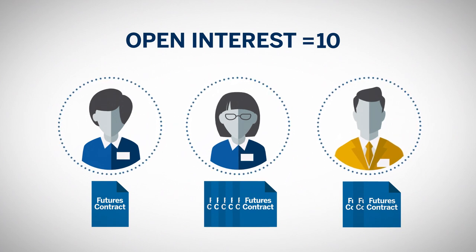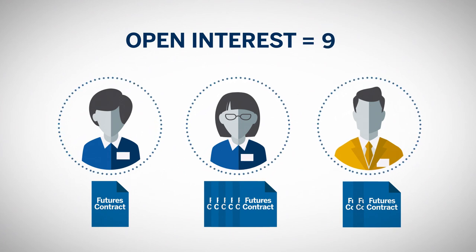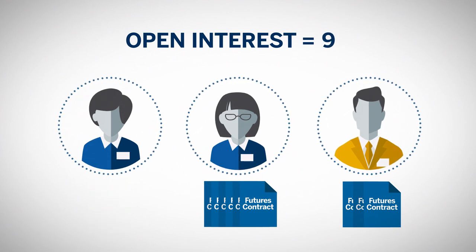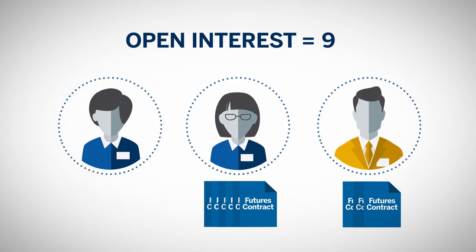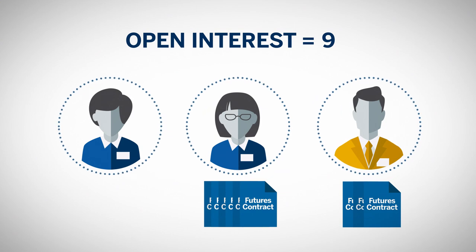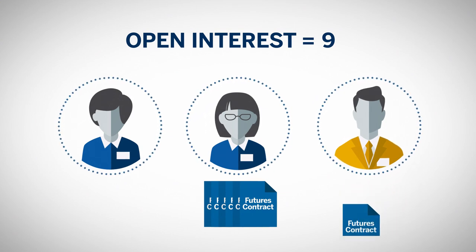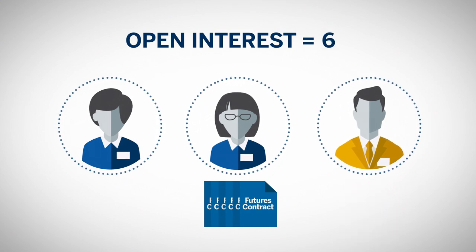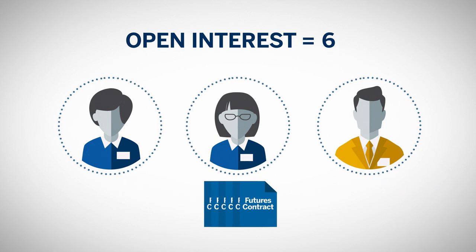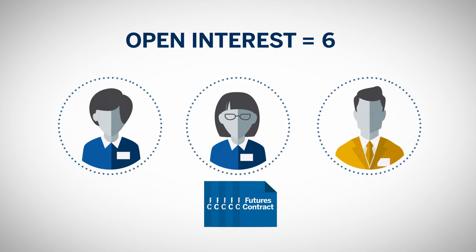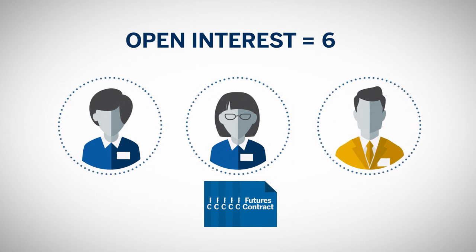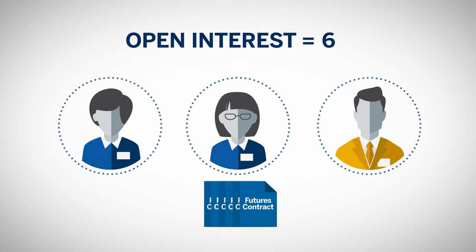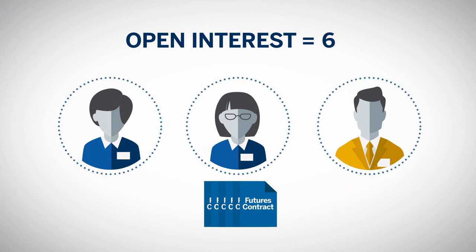For example, open interest declines to nine when Sharon sells one contract. When Kurt decides to exit his position, he buys back his three contracts and brings open interest down to six. At this point, until Cynthia decides to sell her six contracts, open interest will remain constant at six.